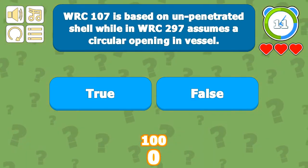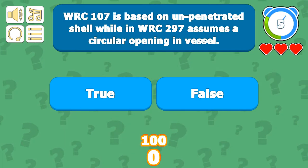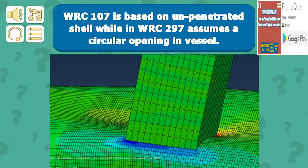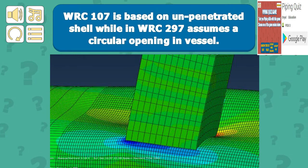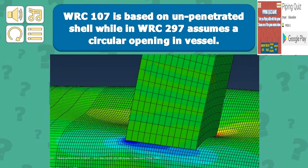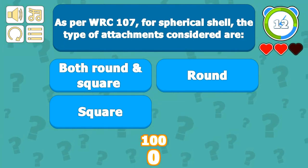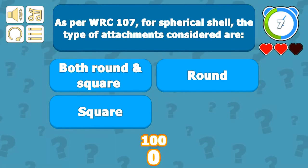WRC 107 is based on an unpenetrated shell, while WRC 297 assumes a circular opening in a vessel. This can be seen from the image where a solid plug or hollow attachment is attached to the shell — an unpenetrated shell — in order to get the stress evaluation done as per WRC 107. For spherical shells, the type of attachment considered includes both round and square.